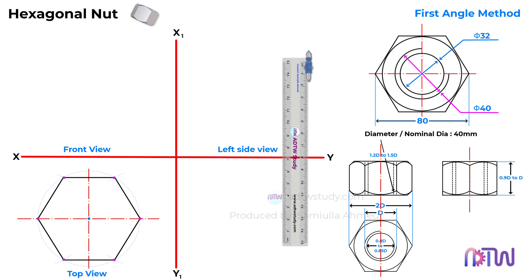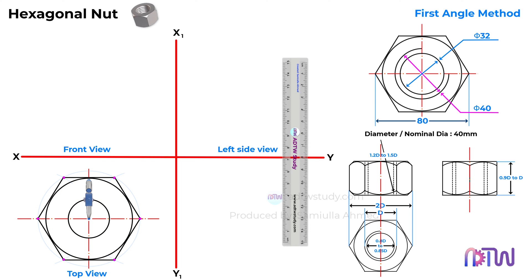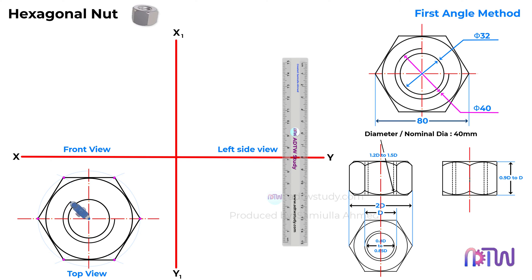Take a ruler and join these points to construct the hexagon. After this, take a compass and adjust it to 16mm in length. Using this point as a center, draw a circle. Then adjust the compass to the length along the axis line from the center and draw another circle. After this, adjust the compass to 20mm in length and draw the 3-quarters circle, which represents the internal thread of the nut. This completes the top view of the nut.